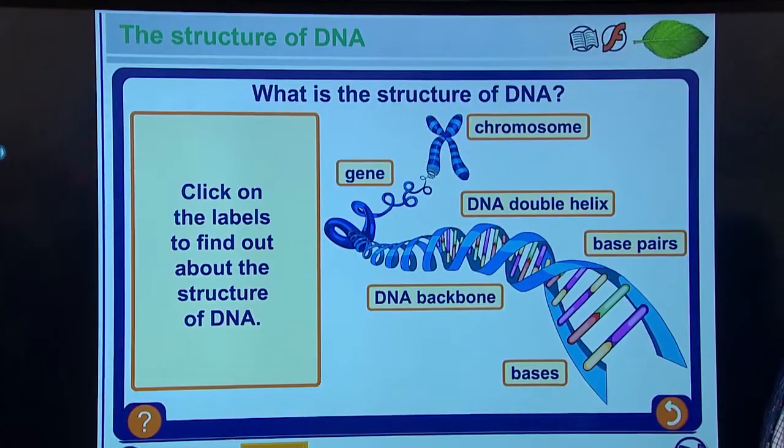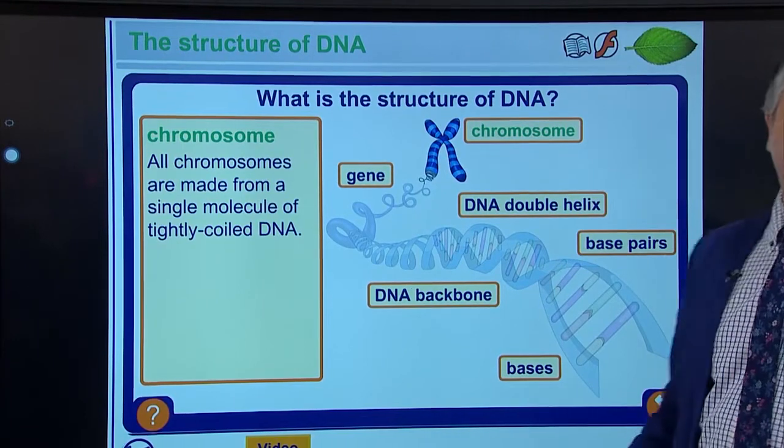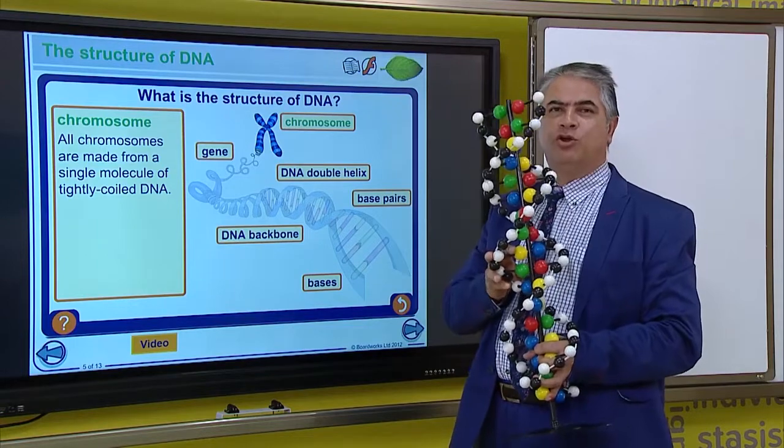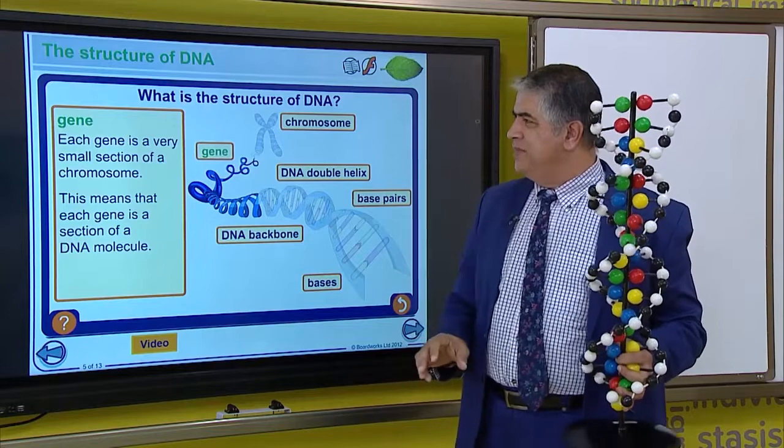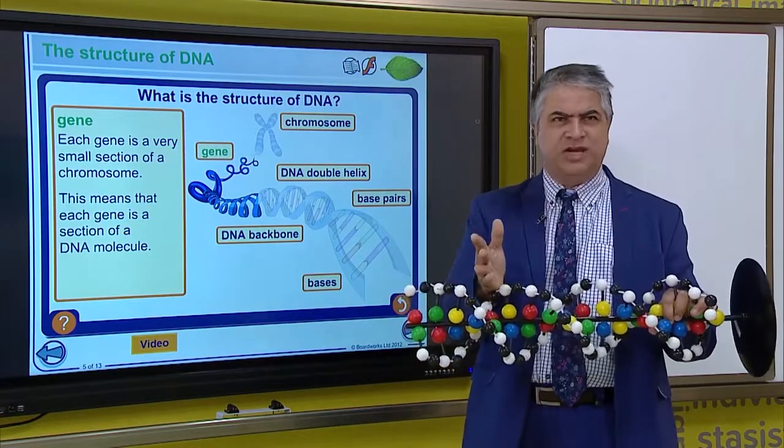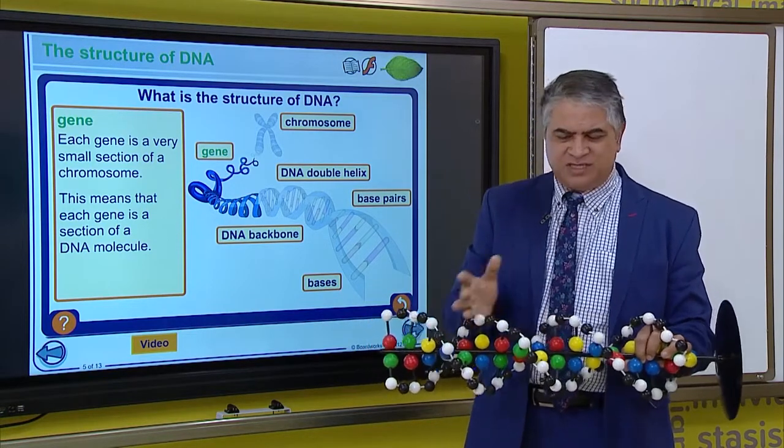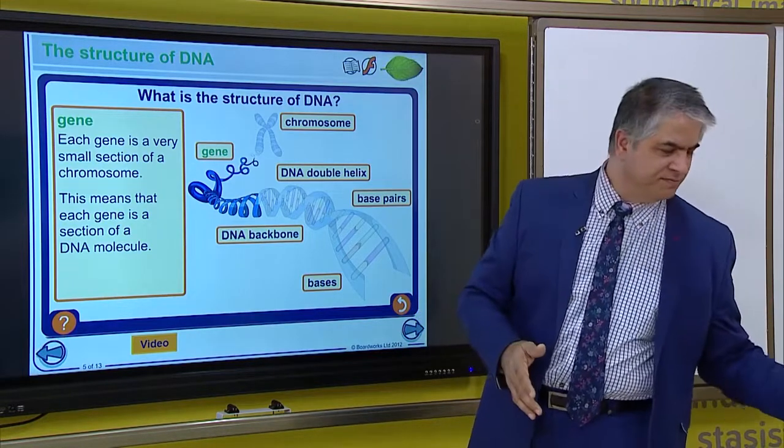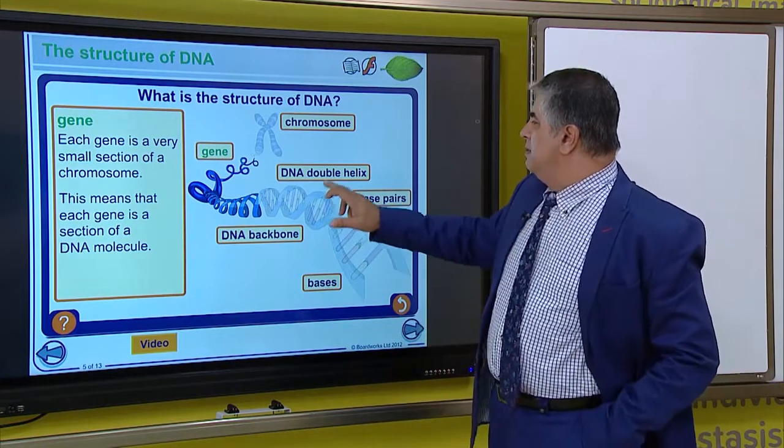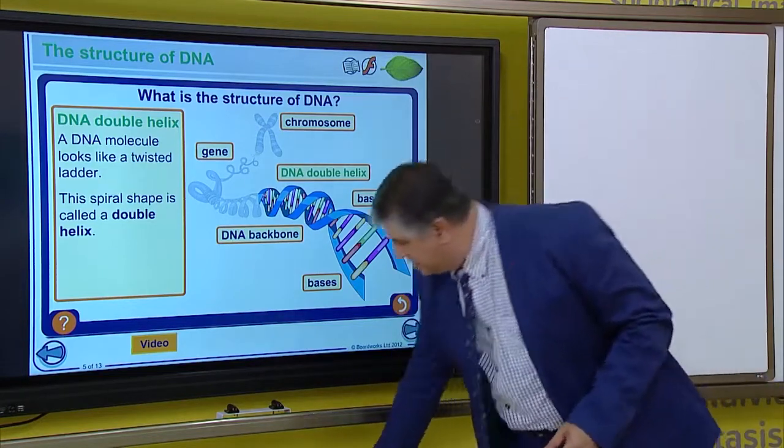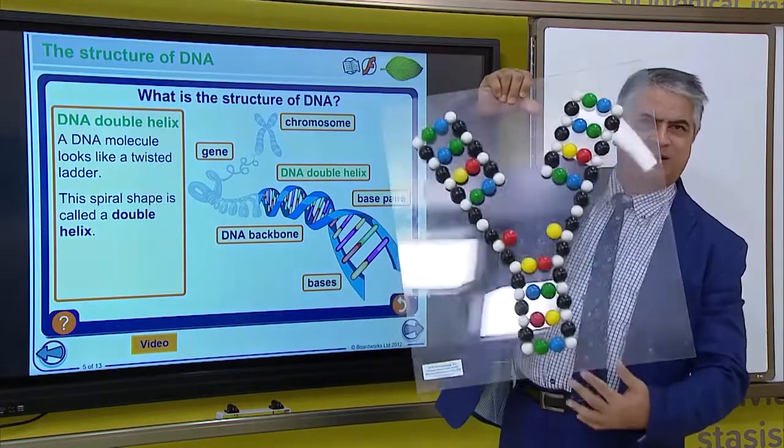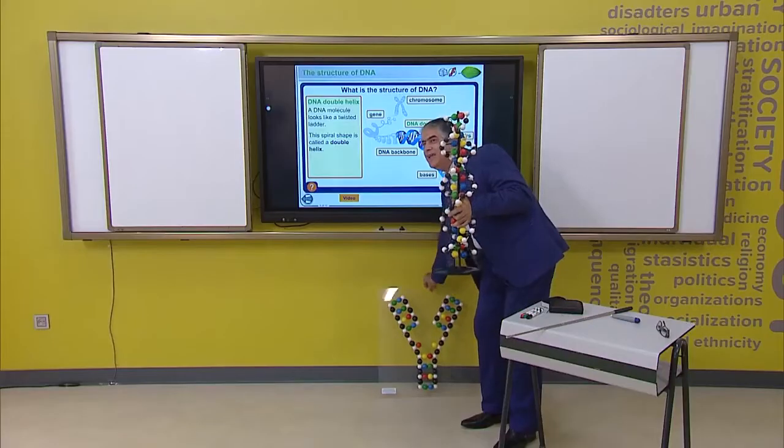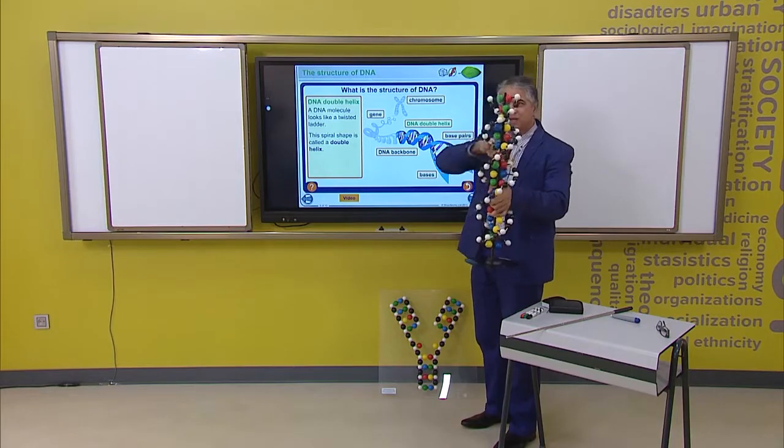Now, let's look at the structure of the DNA. The chromosome is made up of a single molecule of DNA. Now, the gene is a small section, a small section of the DNA molecule. Now, this small section is called a gene. And this gene has the code for the protein that is required. Now, the DNA is made up of a twisted ladder. This is a ladder. This is what a ladder looks like. And this is a twisted ladder. And this spiral shape is called a double helix.